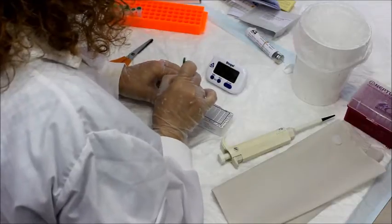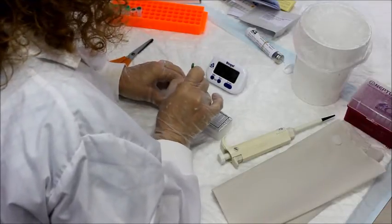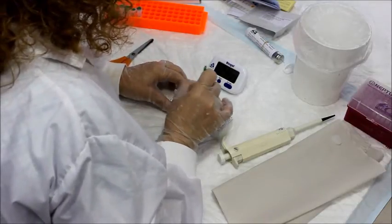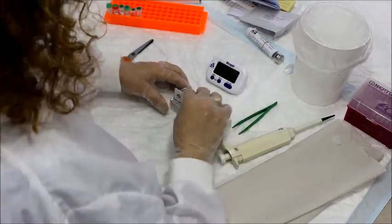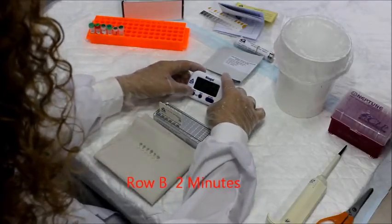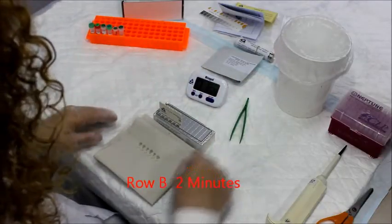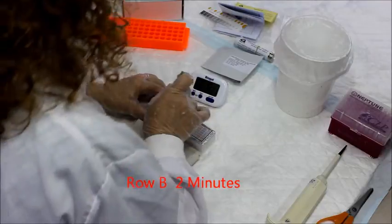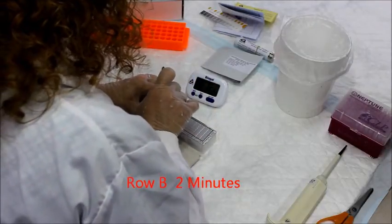Use tweezers to pierce the foil in the next row, which would be row B, and insert comb for two minutes. Gently shake off excess liquid from the comb teeth onto a piece of tissue. Insert the comb into the next well, row C, for five minutes.